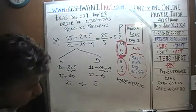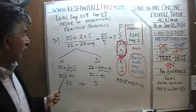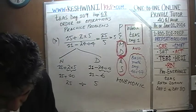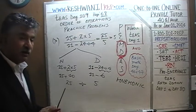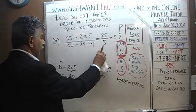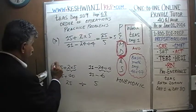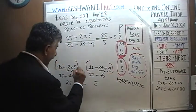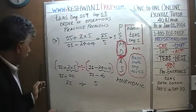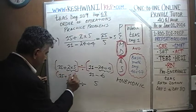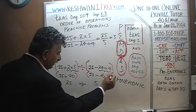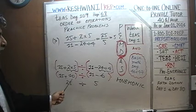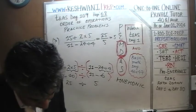The same question, had they written it in horizontal form rather than fractional form, would look like this: the exact same question, nothing changes, just presented a little differently. We do the numerator part first — 2 times 5 is 10 in parentheses — and the denominator part separately, 24 divided by 4 in parentheses, then divide the two results. 25 divided by 5 gives us 5. Same answer. They are the exact same problem.